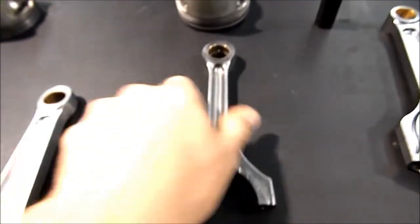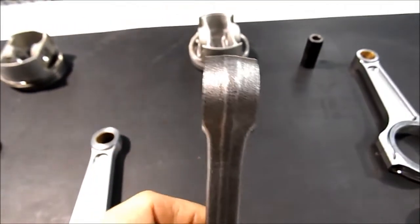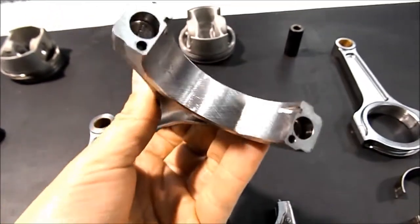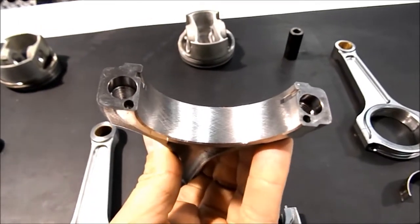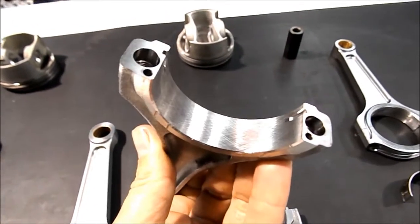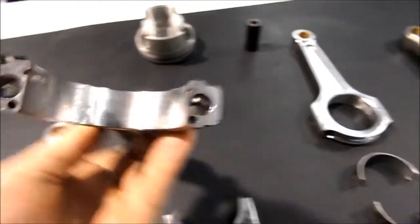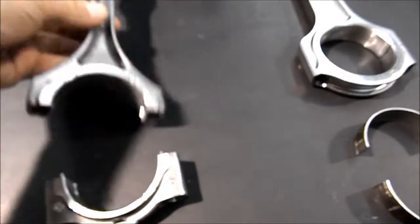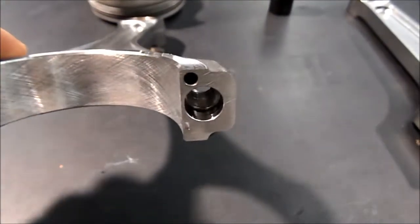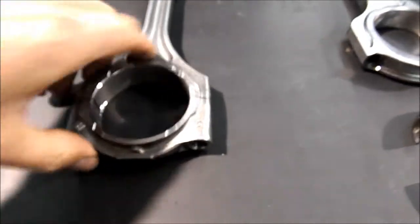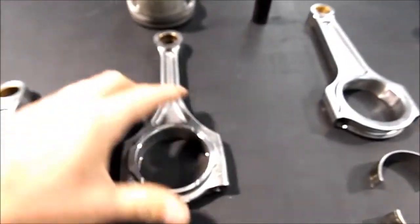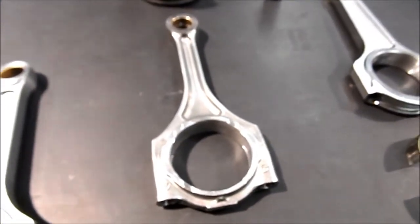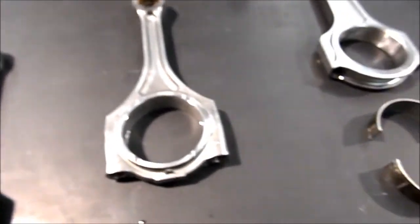The 5.2L or the LP560 conrod, they have gone to quite a bit of effort. As you can see here they are no longer a fracture parted big end, it's machine parted. You can see they have gone to some effort to dowel these conrods. You can see these little dowel pins here and they go into a corresponding hole just next to the bolt hole. So instead of being fracture parted they are now closer to what I call a proper conrod.